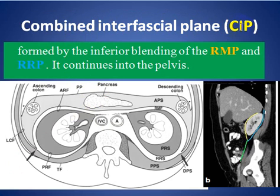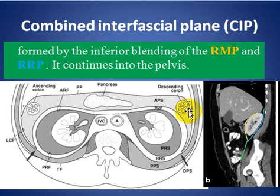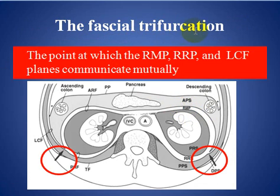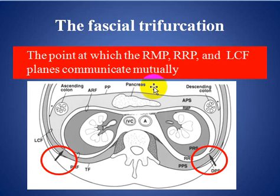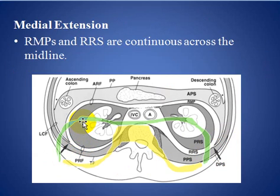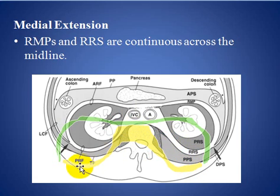The combined interfascial plane is formed by the inferior blending of the anterior and posterior retroperitoneal planes. The fascial trifurcation is the point where the anterior retroperitoneal plane, posterior retroperitoneal plane, and lateral cone fascia communicate, as seen in this picture. The anterior and posterior retroperitoneal planes extend across the midline as medial extensions of the ventral fascia.